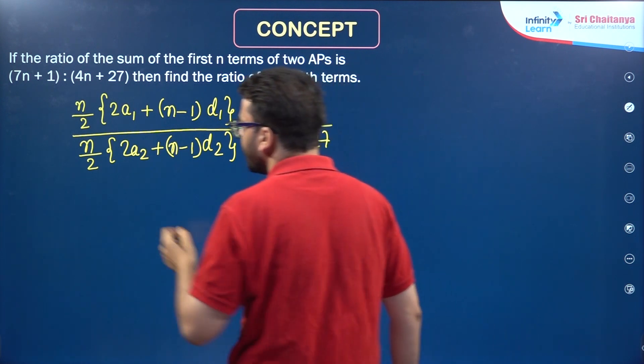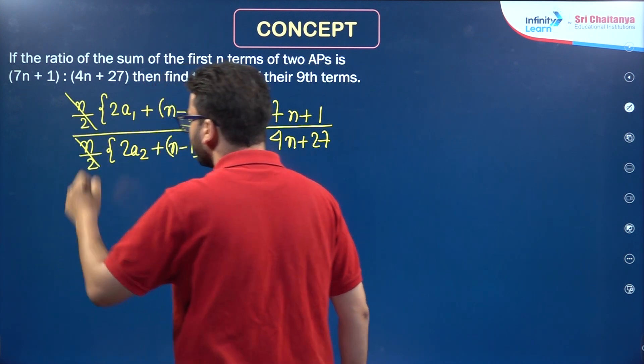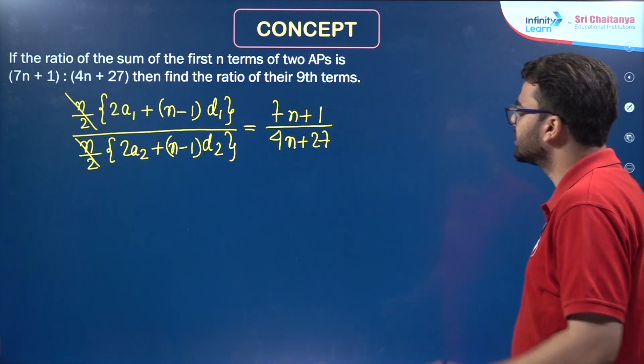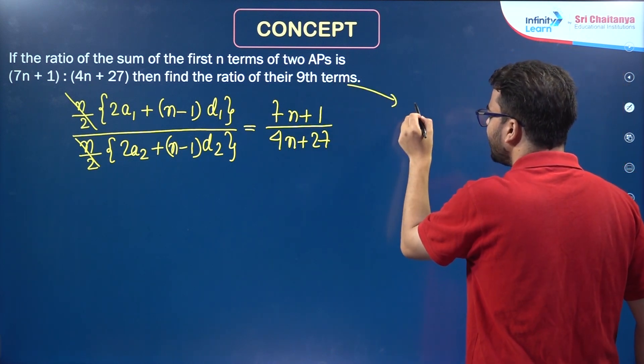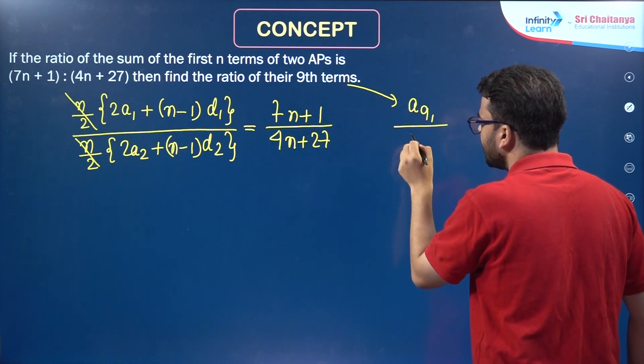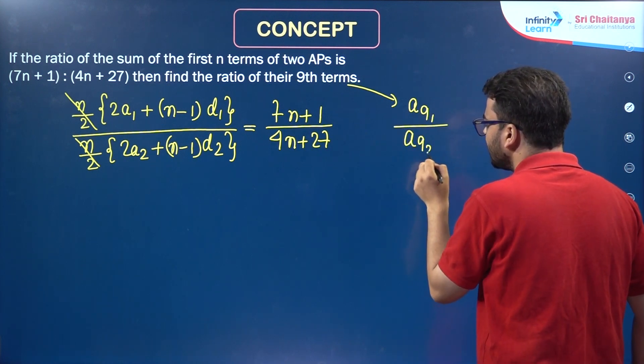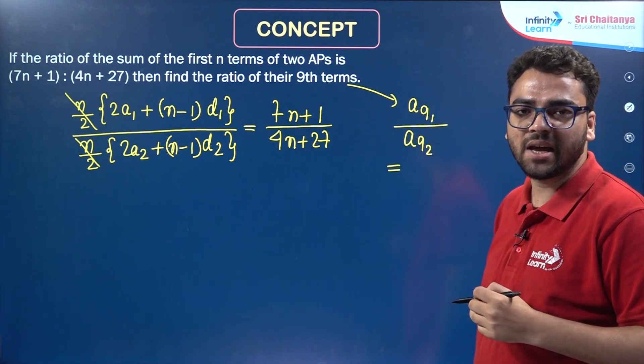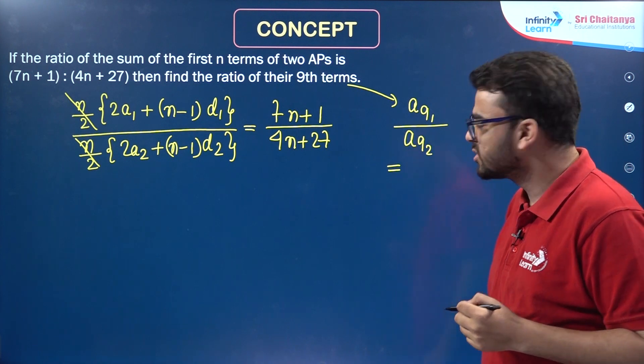Now basically over here we can cancel out this thing. Now we have to find the ratio of their 9th terms. Basically we have to find A9,1, suppose the 9th term of the first AP and A9,2, 9th term of the second AP. So, nth term of an AP is A + (n-1)D.